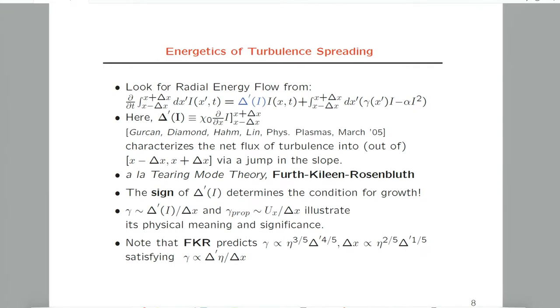If you use only these two relations, we can get the extent of turbulence spreading. We note that Furth, Killeen, and Rosenbluth's theory predicts gamma going like resistivity to the three-fifths power times delta prime to the four-fifths power, and also delta x going like a fractional power. If you multiply it, you get the same relation—so this is nothing but elaborate dimensional analysis in the case of this elaborate boundary layer theory.